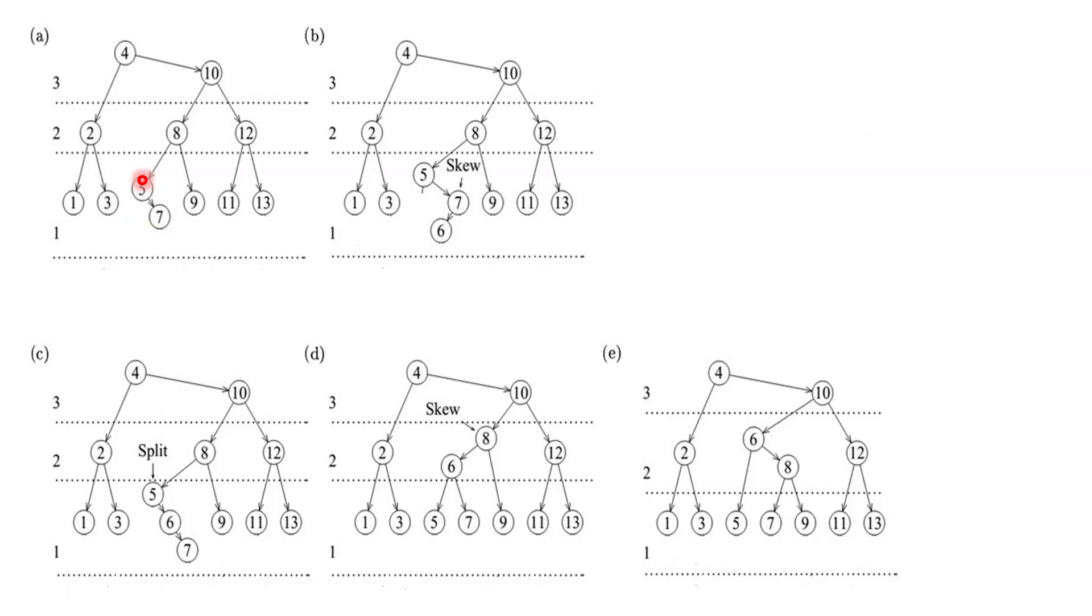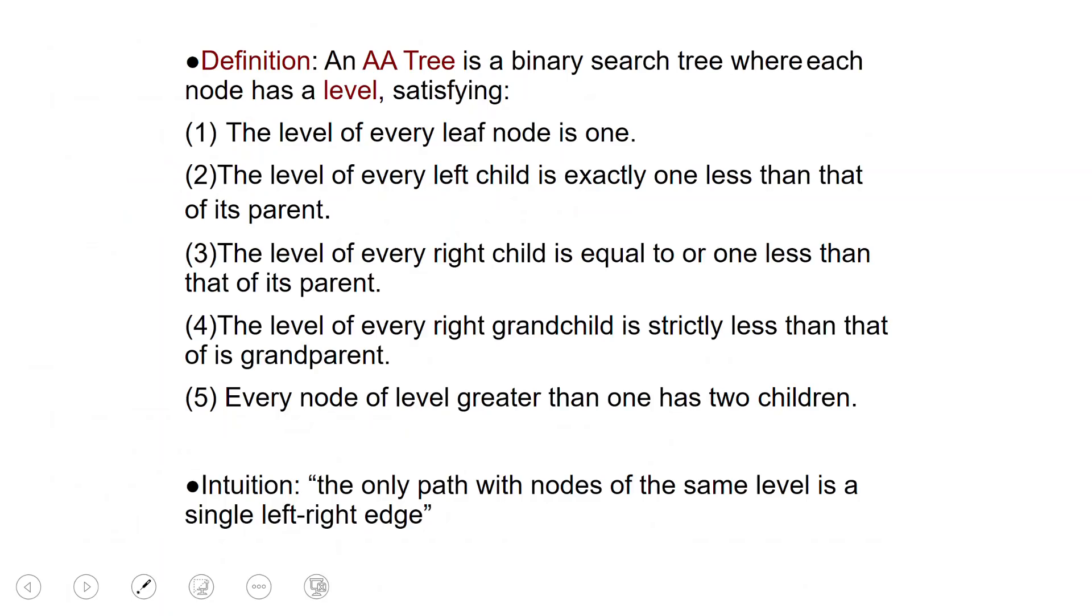Here is the single left right edge among nodes with the same level. To be more precise, an AA tree is going to be a binary search tree, and each node moreover has a level.